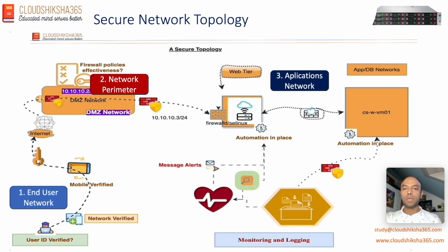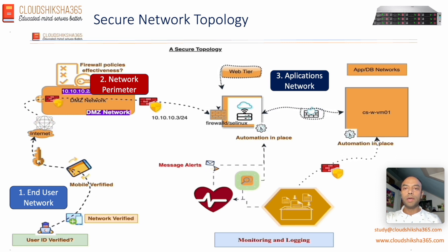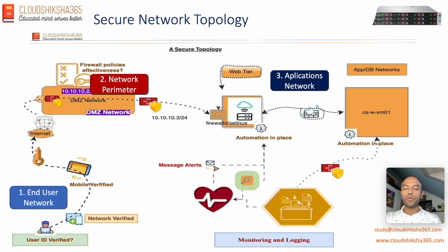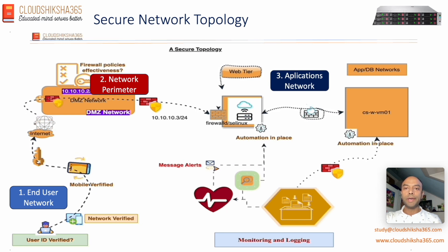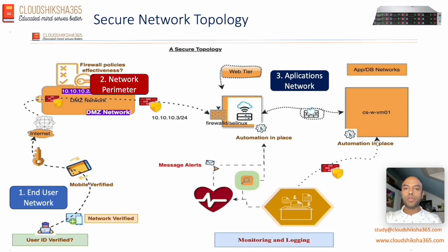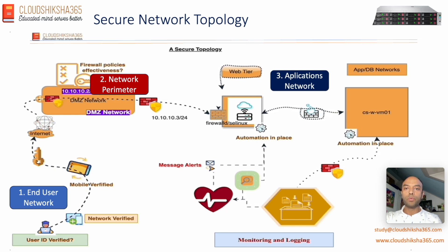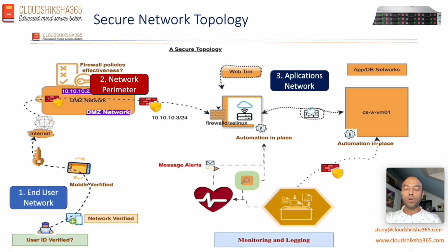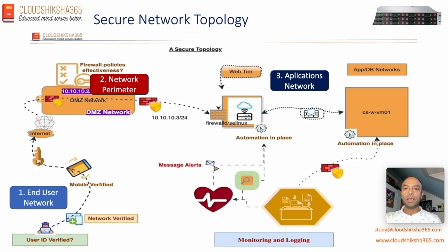The third section is the application network, which can be further divided into multiple layers. This is where your web servers, application servers, and databases reside in different network segments. It is also important that you have firewalls across all these networks separately, with proper policies across these different network segments.